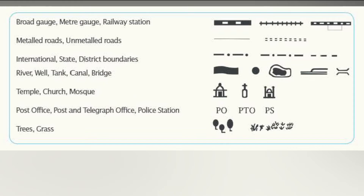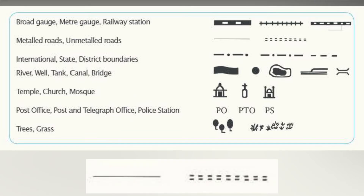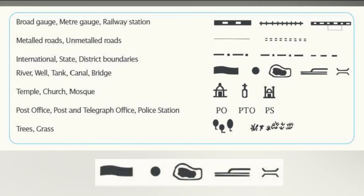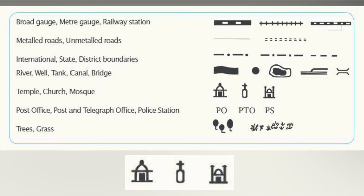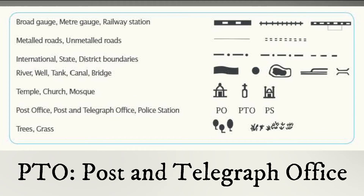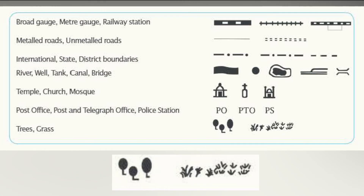Here are some symbols used on maps: broad gauge, meter gauge and railway station. Gauge means the thickness, size or capacity of something. Next are metal roads and unmetal roads, followed by international, state and district boundaries. Other symbols include river, well, tank, canal and bridge, as well as temple, church and mosque. PO stands for post office, PTO stands for post and telegraph office, and PS stands for police station. The next symbol represents trees and grass.